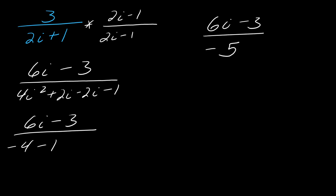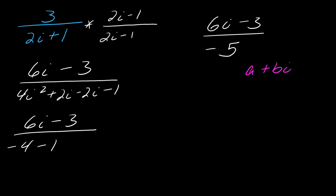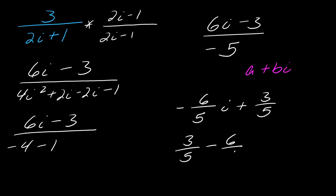You might think we're done, but this is not technically finished. Usually you want to present this as a complex number. Complex numbers have the form a plus bi — they have to be two separate pieces. If your course requires you to state this as a complex number, you have to break this up. So this would be negative 6 over 5 times i plus 3 over 5. Depending on how strict your class is, you might want the imaginary part coming second. As long as you have it as two separate pieces, that's generally fine.